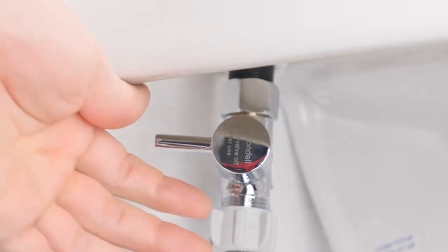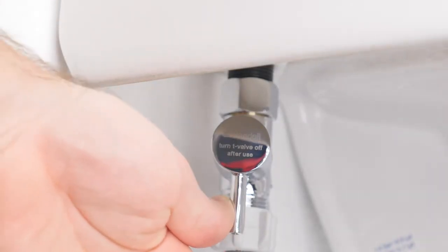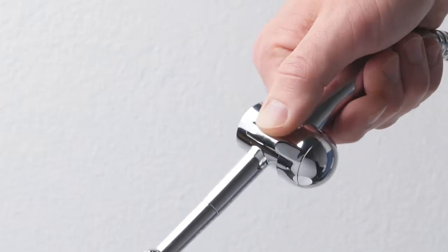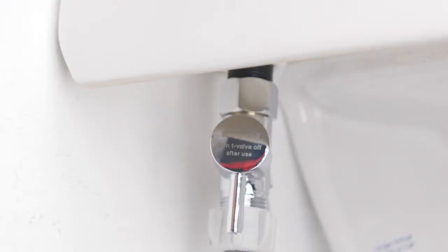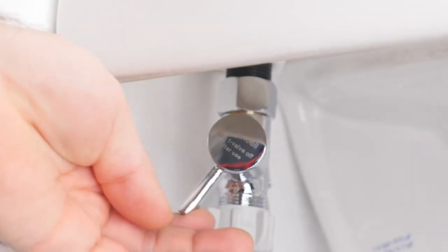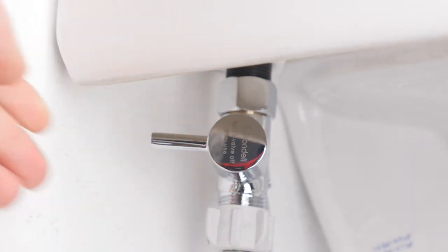To use the bidet, open the provided T-valve and push the lever on the spray head to initiate the flow of water. For safety, it's important to follow our manufacturer's recommendations and turn off the T-valve after each use.